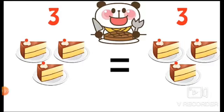Next, students, look at this third picture. This is a cat. One side has three pieces of cake and the second side has three pieces of cake. Cake and cake are equal, so the sign symbol is equals to.